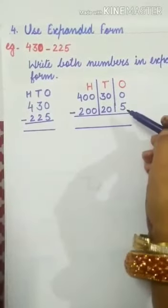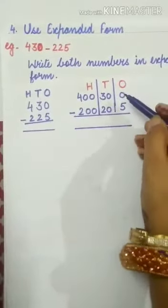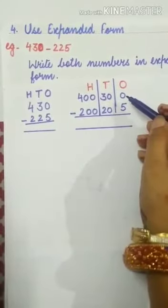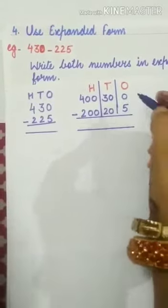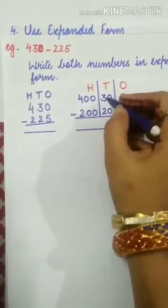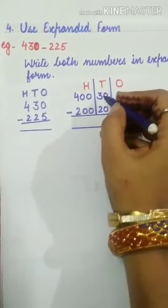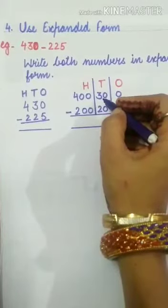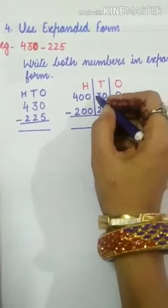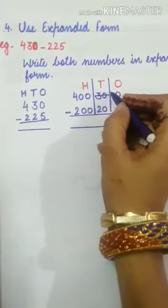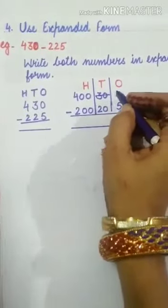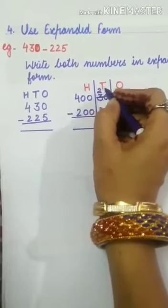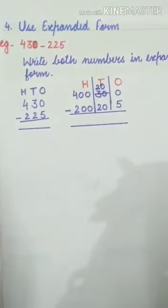Is it possible to subtract 5 from 0? No. Then what we will do? We have to take borrow from the tens place. Here at the tens place the number is 30. If we take 1 ten from here and give it to ones, how much will be left? 2 tens, it means 20 will be left.